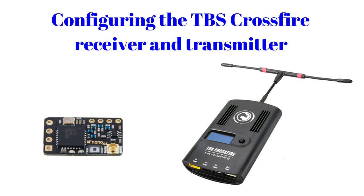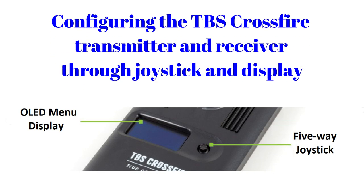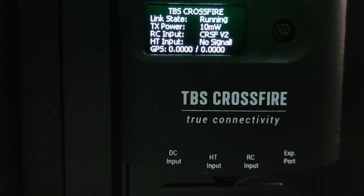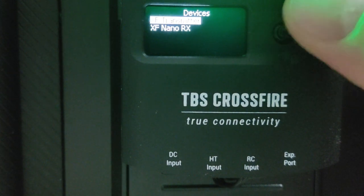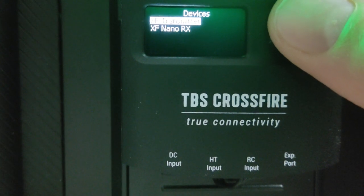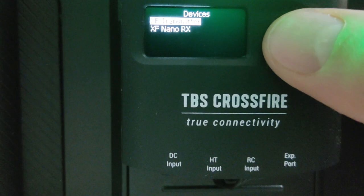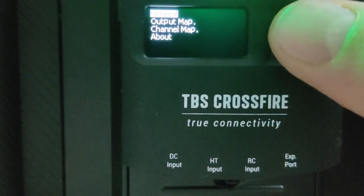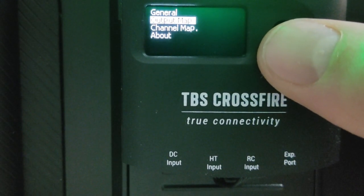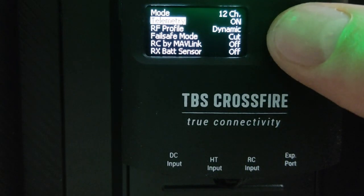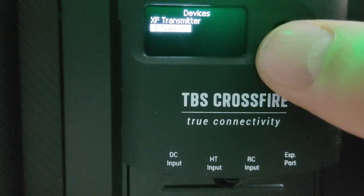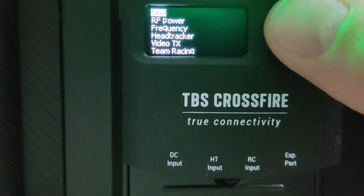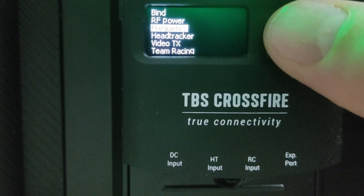The TBS Crossfire TX module and the receiver can be configured using the LUA script or by using the joystick and the display placed on the module. If you use the joystick and the display, press along the joystick and here you have the devices — the transmitter, the first one, and the receiver, the second one. Go to the receiver and ensure that the telemetry is set to ON in the general tab. Then go back to the transmitter and in the frequency section change the Bluetooth mode to MAVLINK emulator.